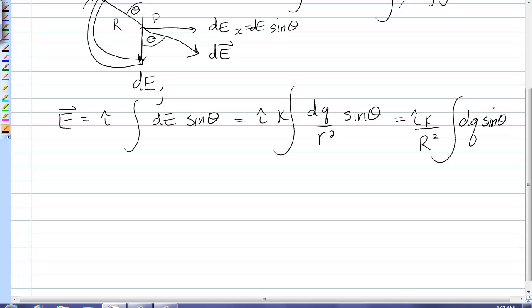Now in order to get dq in terms of theta I need to use linear charge density lambda which will be dq over ds. And ds being an arc length is R d theta. And the little wedge that I use to get that relationship, the angle is d theta, radius is R, and ds is the curved arc length.